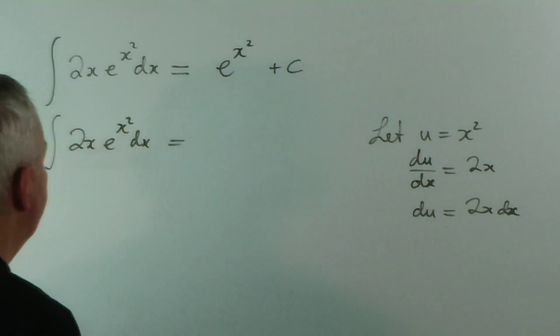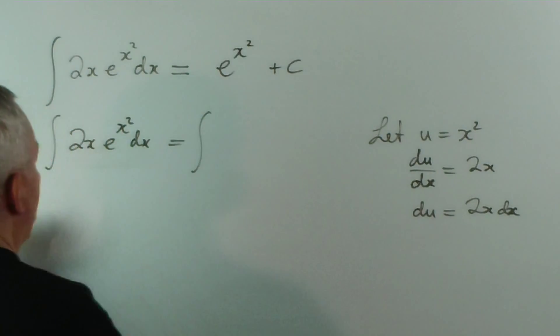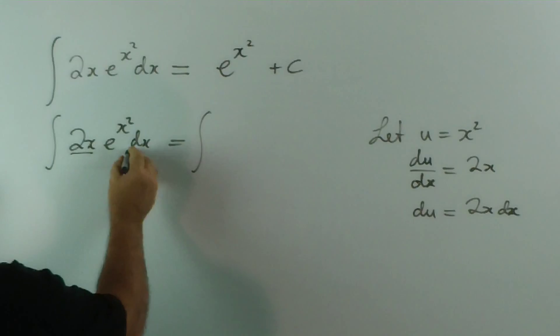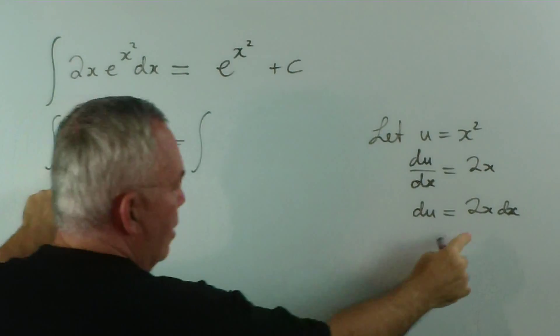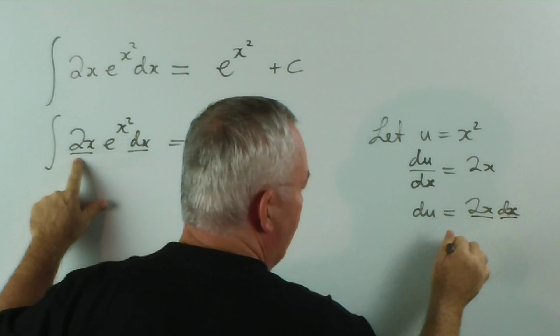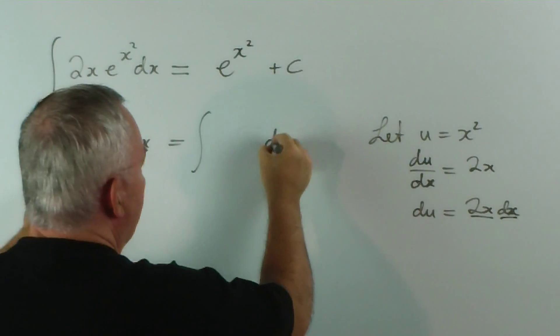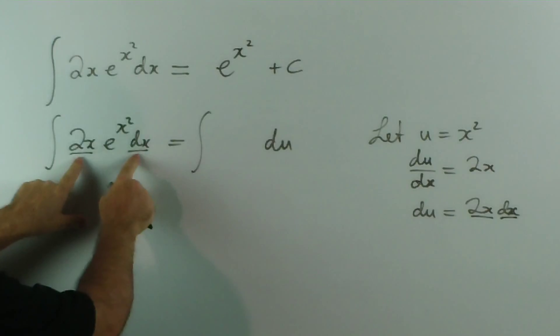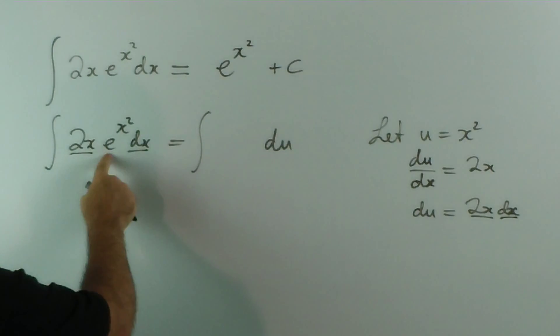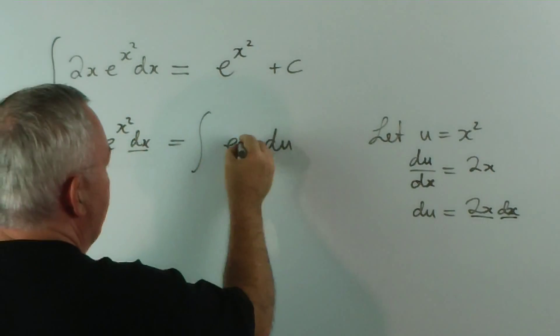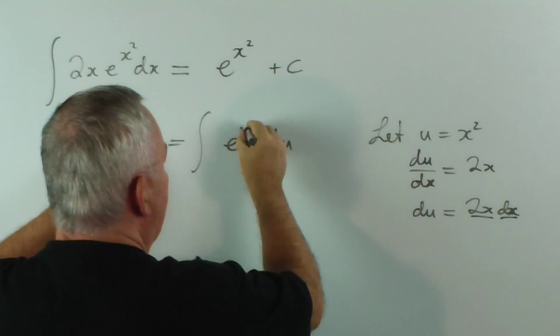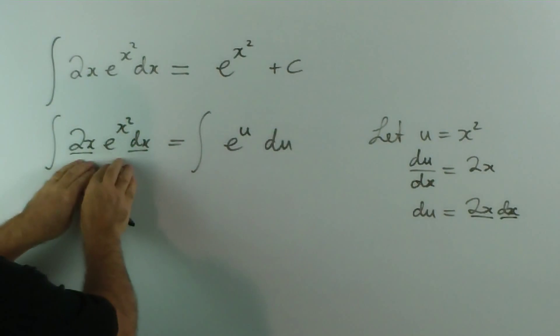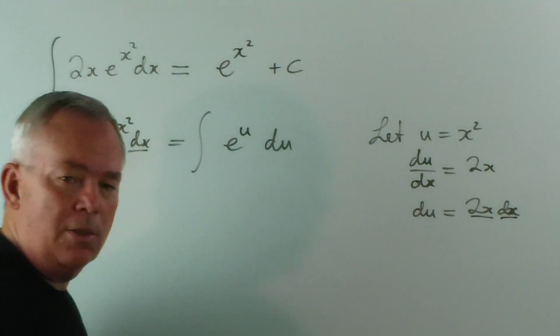Now, fortunately, you can see that we have a 2x times dx in our expression here. 2x times dx. So we can replace that with a du, both those bits. The e to the x squared we can write as e to the... and we've replaced x squared now with a u. So this integral is the same as that integral in terms of value.